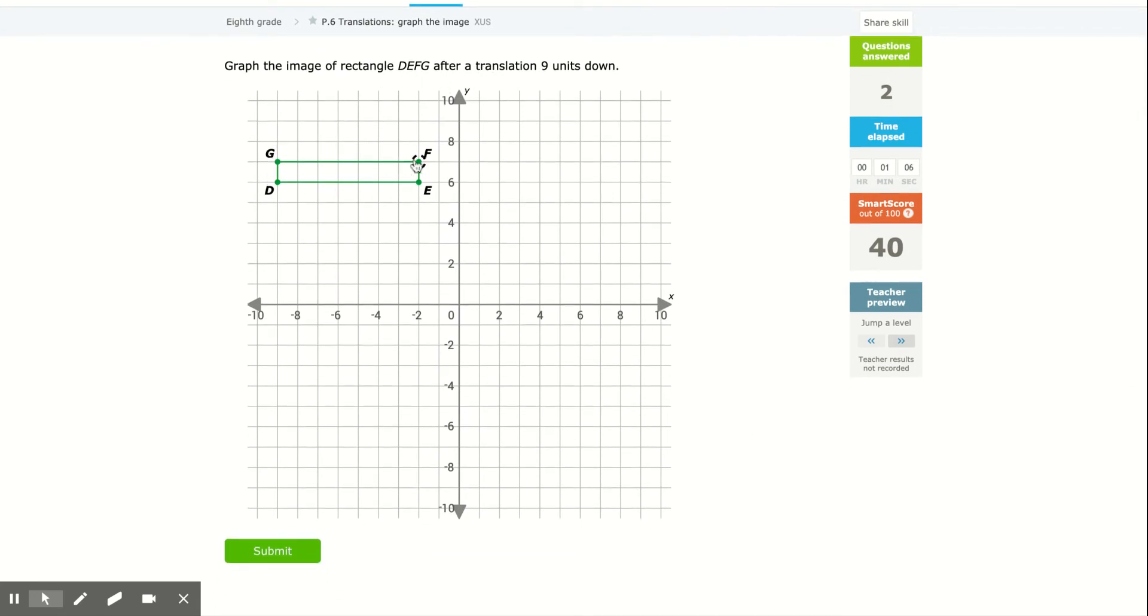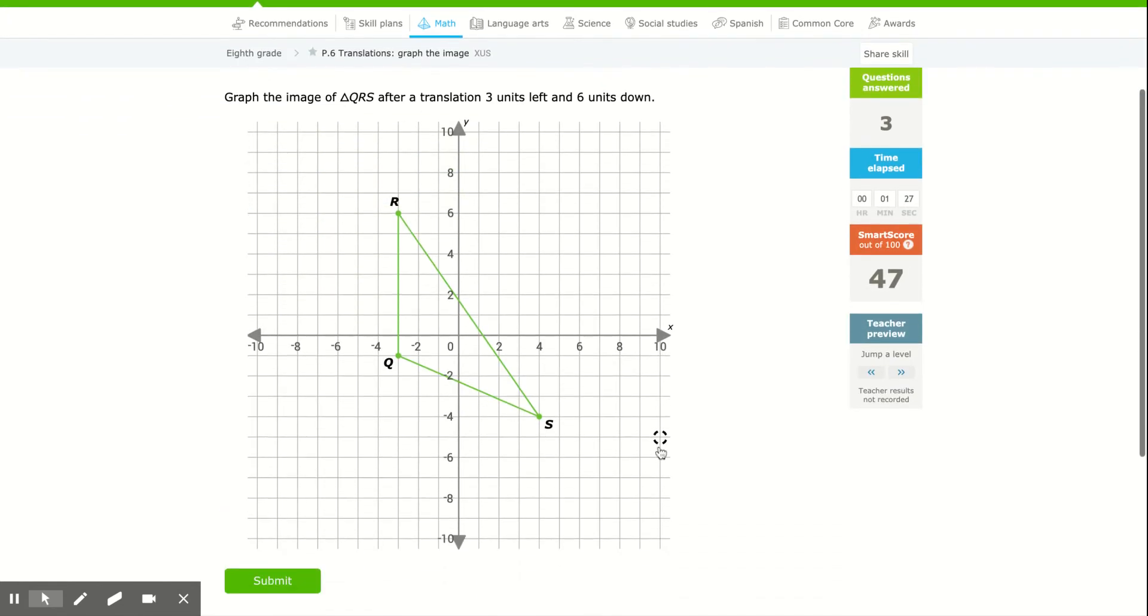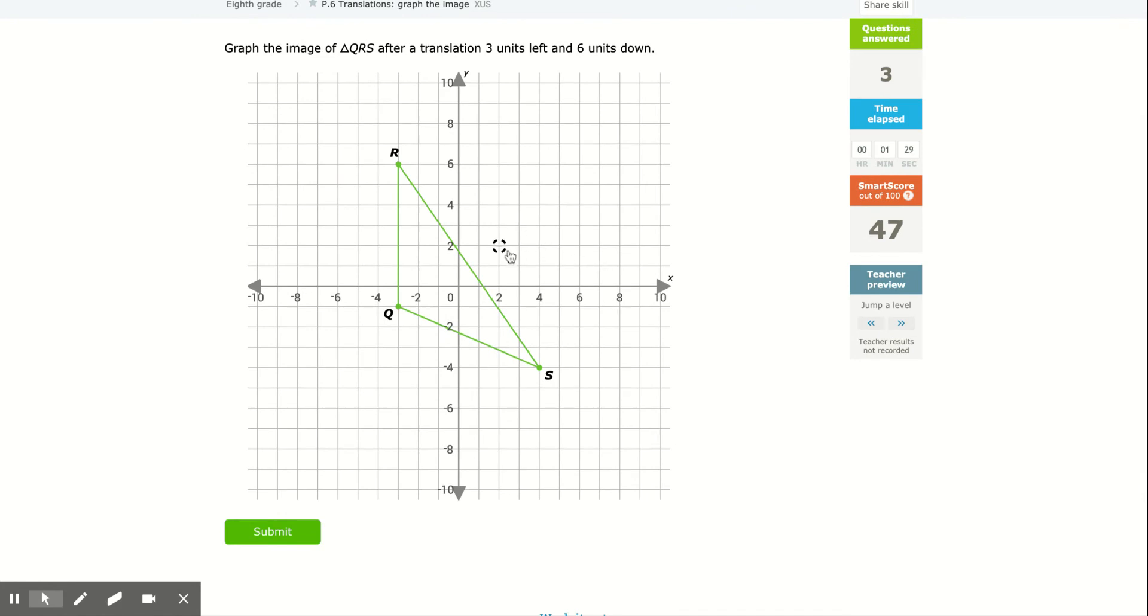This is going to be translating this rectangle 9 units down. So just make sure you can go 9 units down. I prefer to subtract than to count the squares. So I'm at 7. 7 minus 9 is going to be negative 2. So I'm going to be here at negative 2. Just makes it easier to, I think, translate using mathematics rather than 1, 2, 3, 4, 7. But you can do that. There's nothing wrong with that.